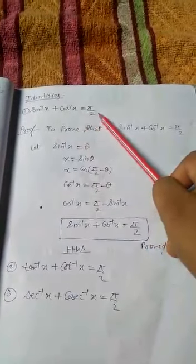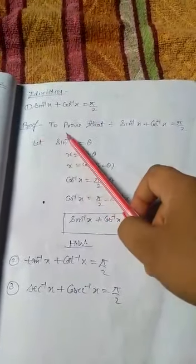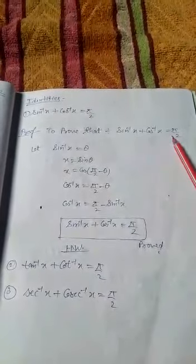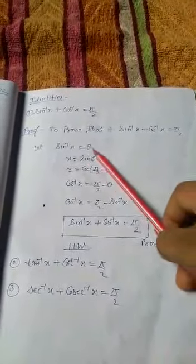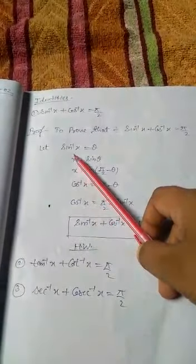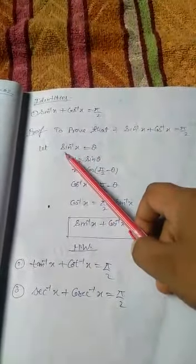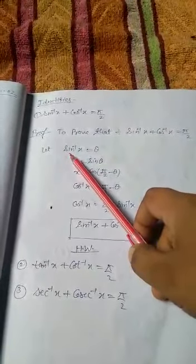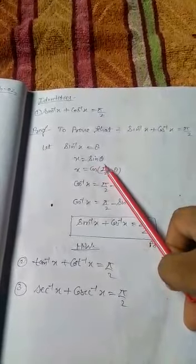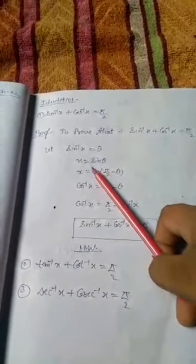Proof: To prove that sine inverse x plus cos inverse x is equal to π/2, let sine inverse x is equal to θ. Taking right side, x is equal to sin θ.